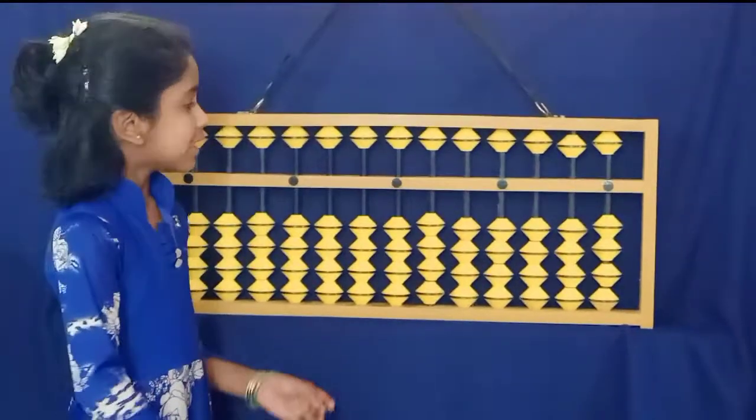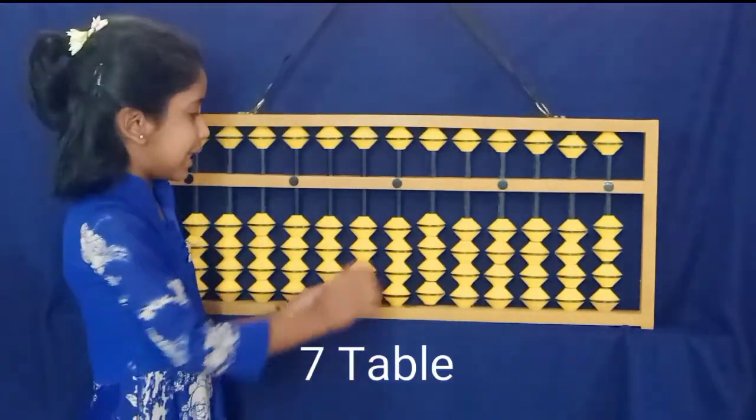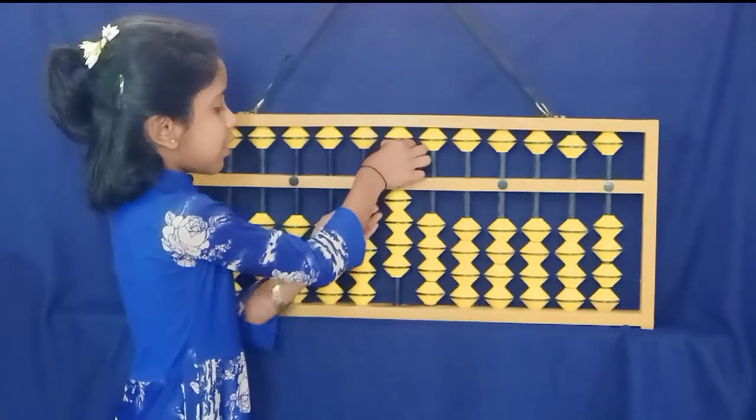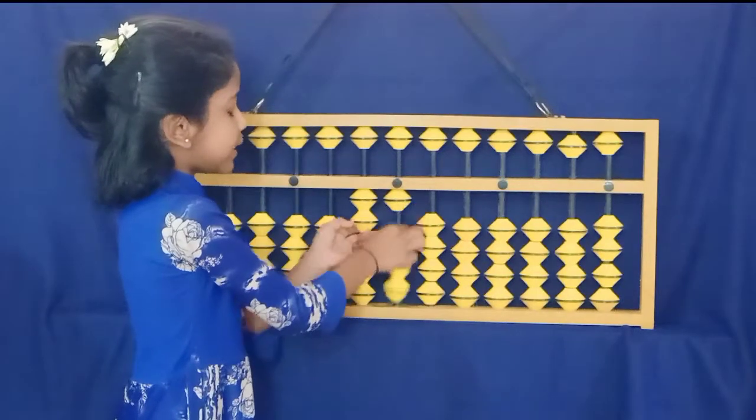Thank you. Now I am doing 7 tables. 7-1s are 7, 7-2s are 14, 7-3s are 21.